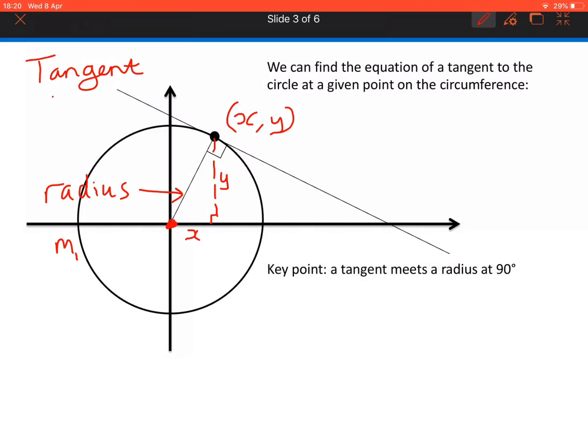And what we want to find is the gradient of the tangent, let's call that m2. And because we know that they are perpendicular, we know that m2 is the negative reciprocal of m1.